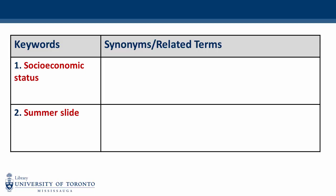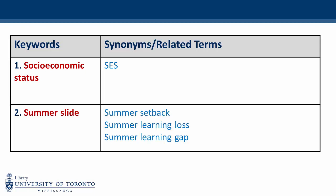On the right-hand side is where we include our synonyms and related terms. In our example, our synonyms are SES for socioeconomic status, and summer setback, summer learning loss, and summer learning gap for summer slide. When brainstorming synonyms and related terms, try to think of other words that could be used to describe your topic.